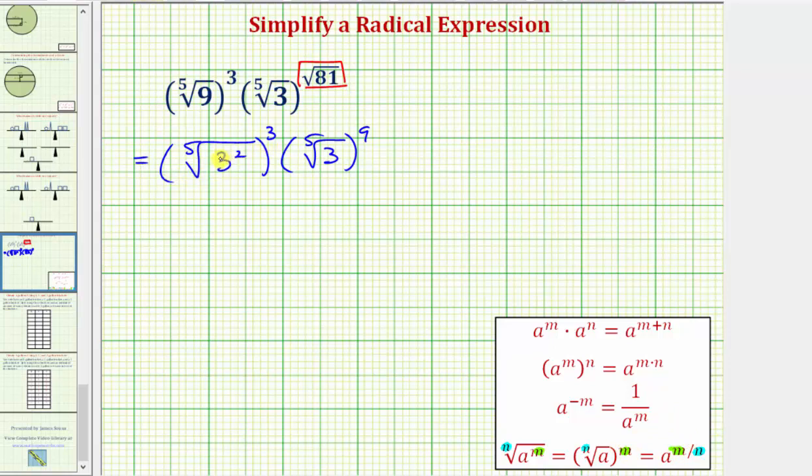Notice how this first expression has an exponent underneath the radical as well as outside the radical, so we'll do this in two steps. First, the index is five and the exponent is two. Looking at the second set of parentheses, again the index is five and the exponent is nine.